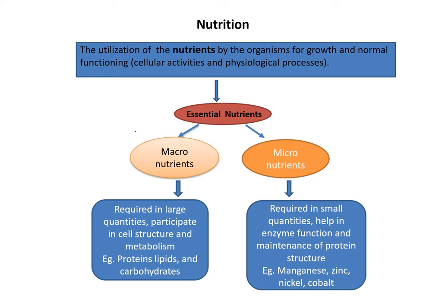The major macronutrients are carbon, hydrogen, oxygen, nitrogen, sulfur, phosphorus, potassium, calcium, magnesium, and iron. These macronutrients are required in large quantities for growth.